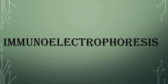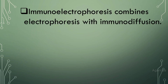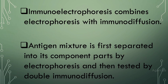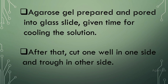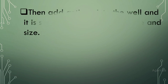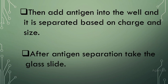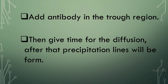Next, immunoelectrophoresis, which combines electrophoresis with immunodiffusion. The antigen mixture is first separated into its component parts by electrophoresis and then tested by double immunodiffusion. Agarose gel is prepared and poured into a glass slide, given time to cool. A well is cut on one side and a trough on the other side. Antigen is added into the well and separated based on charge and size. After antigen separation, antibody is added in the trough region and given time for diffusion, after which the precipitation line forms.